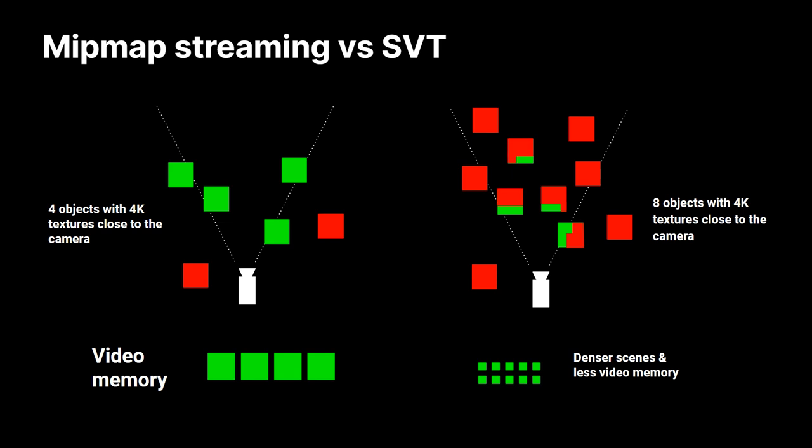This is the magic of Streaming Virtual Texturing — these textures don't need to be entirely loaded; only the parts visible to the camera need to be loaded. That's the main advantage compared to mipmap streaming, where you load entire mipmaps. Both are good for large open worlds and allow you to use more data than you have memory. But Streaming Virtual Texturing shines for dense scenes or really high resolution textures. With mipmap streaming, four cubes close to the camera each need their full 4K loaded; with streaming VT you could have eight objects and only load the visible parts, achieving denser scenes with less memory.